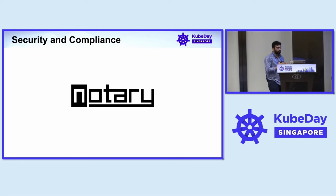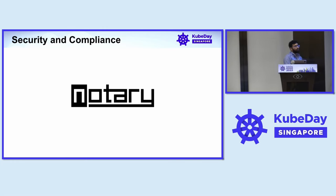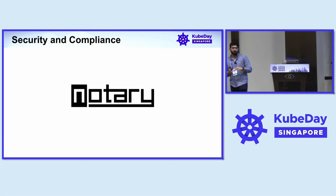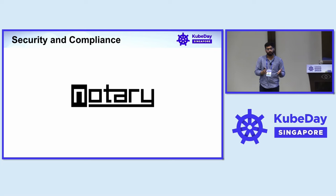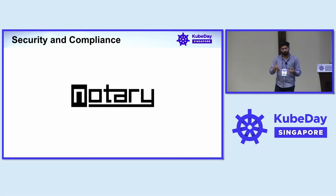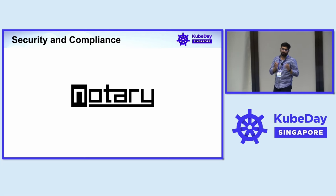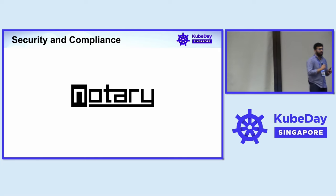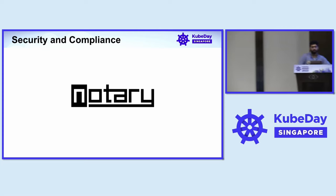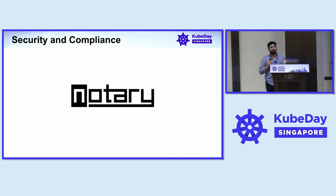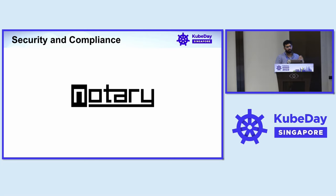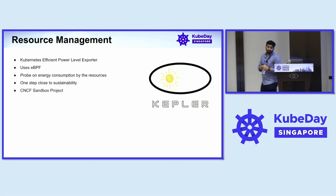We previously used Notary for signing artifacts — making sure artifacts are valid. Now we're using Artifact Registry, a Google Cloud product, which is pretty seamless for our infrastructure. If your infrastructure is cloud-specific, there is no need to try external artifact signing tools. But you can definitely try Notary if needed.